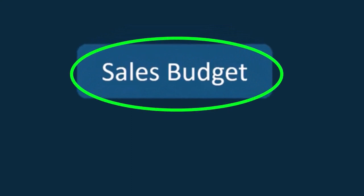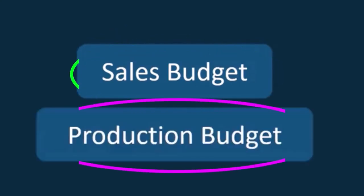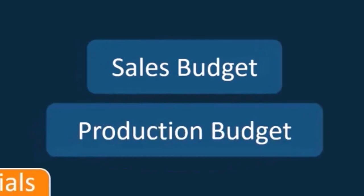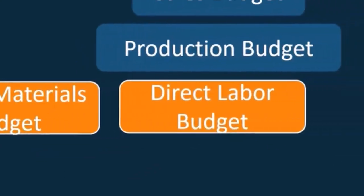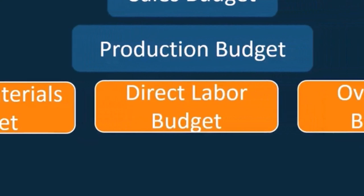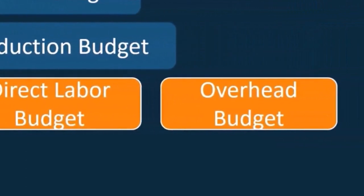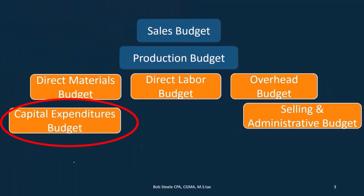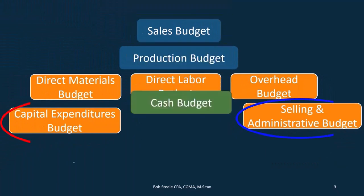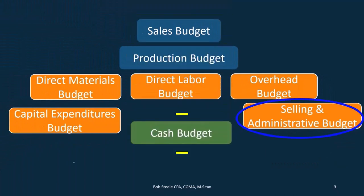These are going to be the components. We started with the sales budget — we need to do it in this order. Then we have the production budget, and then the production budget will be used to make the direct materials budget, the direct labor budget, the overhead budget, as well as the capital expenditures budget, and the selling and administrative budget. Then we're going to have the cash budget.